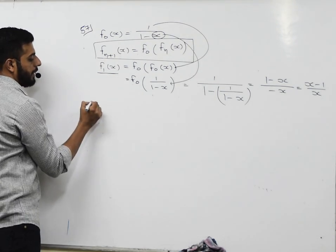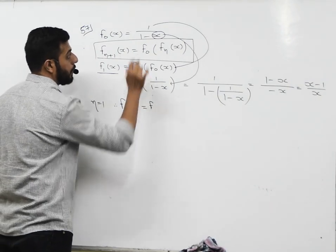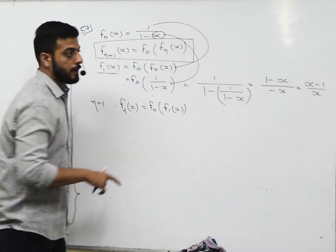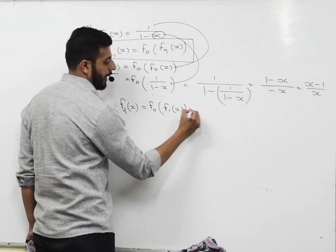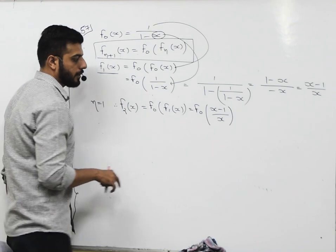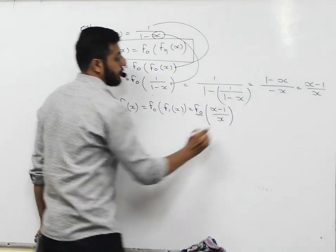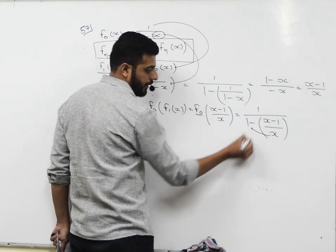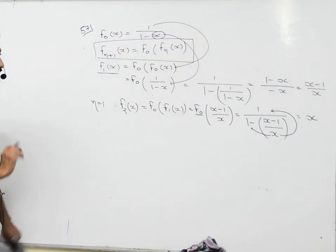Now putting n = 1, I get f₂(x) = f₀(f₁(x)). We already found f₁(x) = (x−1)/x. So f₂(x) = f₀((x−1)/x), which gives 1/(1 − (x−1)/x). Taking LCM, denominator to numerator, x − (x−1) = x − x + 1 = 1, so f₂(x) = x.